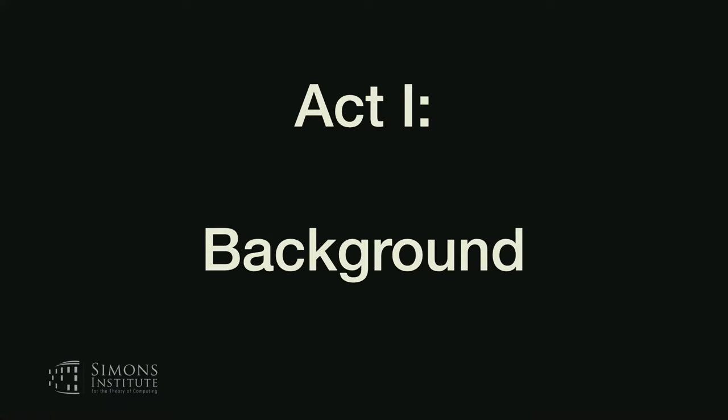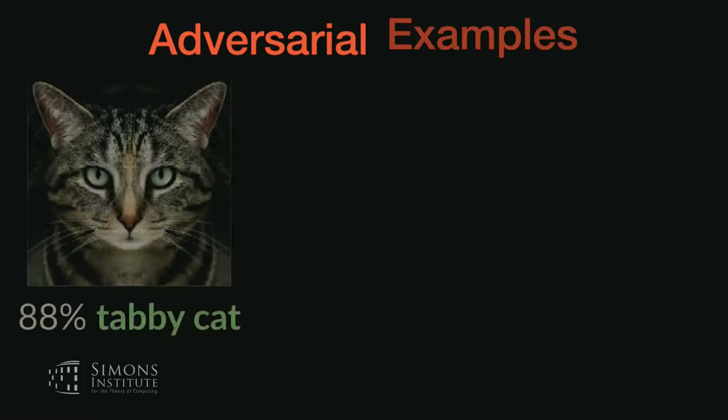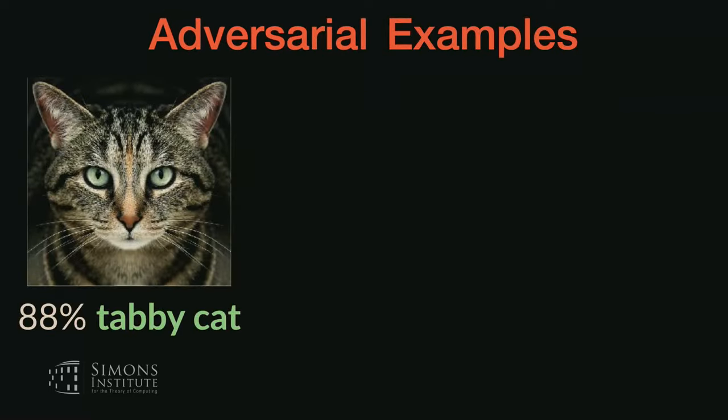I'm going to talk about alignment and adversarial stuff with language models. Let me get started with a little bit of background so we're all on the same page. I'm going to walk through the words of my title. I'll start with the adversarial piece, because this can mean different things to different people. For me, adversarial means adversarial examples — a really old phenomenon that most people are familiar with.